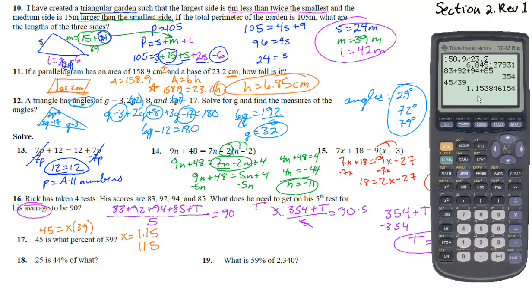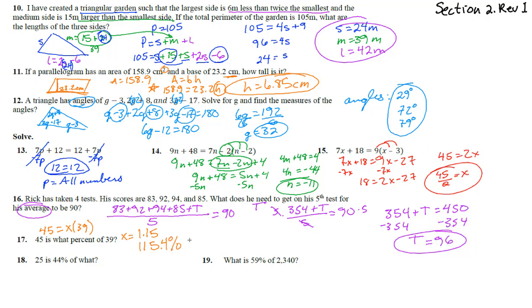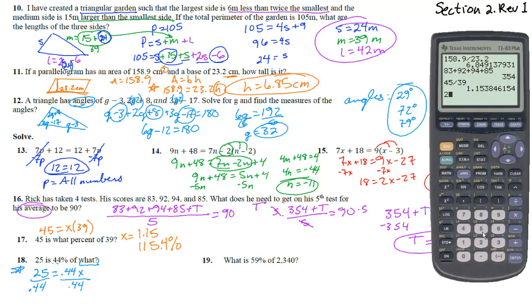Number 18: 25 is 44 percent of what number? Converting 44 percent to 0.44, the equation is 25 equals 0.44 times x. Dividing both sides by 0.44, x equals 25 divided by 0.44, which is approximately 56.82.